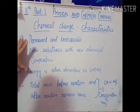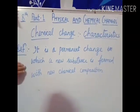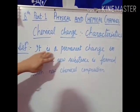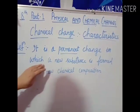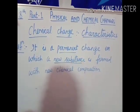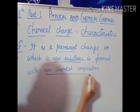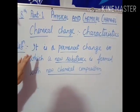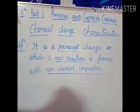Now the definition of chemical change: it is a permanent change in which a new substance is formed with a new chemical composition. You have to write this as the definition of chemical change.